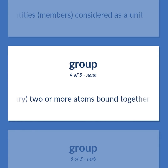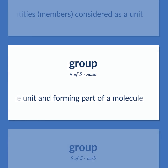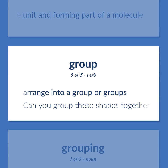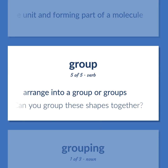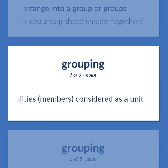Group: Chemistry — two or more atoms bound together as a single unit and forming part of a molecule. Arrange into a group or groups — can you group these shapes together? Any number of entities, members, considered as a unit.